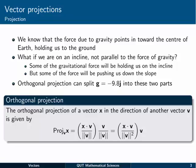And we're not parallel to the force of gravity. Some of the gravitational force would be holding us onto the incline, while some of it would be pushing us down the slope. An orthogonal projection can split the g-force, g equal to minus 9.8j, into two parts, such as one along a slope and into a slope.